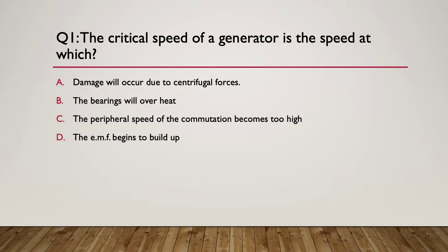Question one: the critical speed of a generator is the speed at which what happens? A: damage will occur due to centrifugal forces. B: the bearings will overheat. C: the peripheral speed of a commutator becomes too high. Or D: the EMF begins to build up. So what is the critical speed — A, B, C, or D?